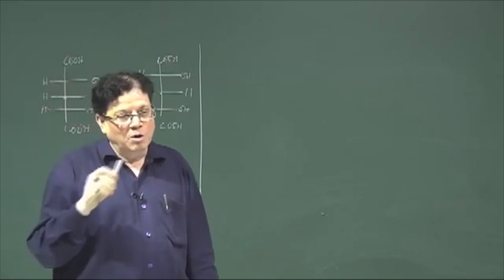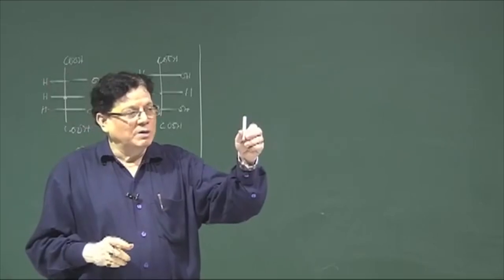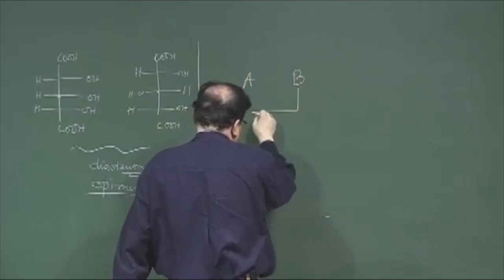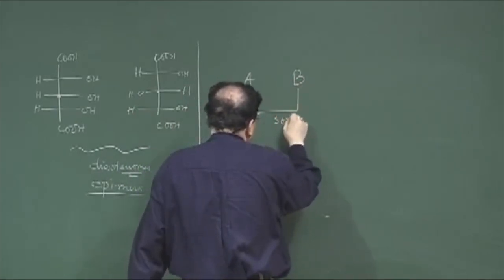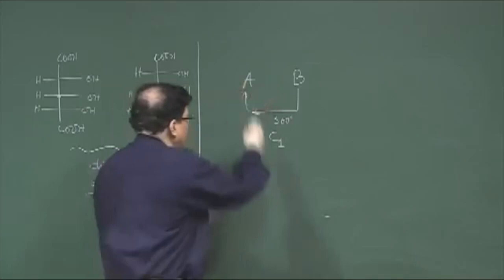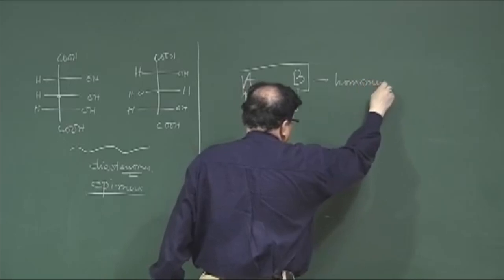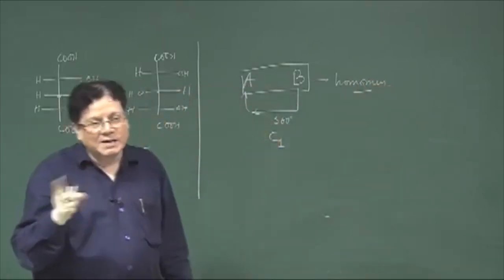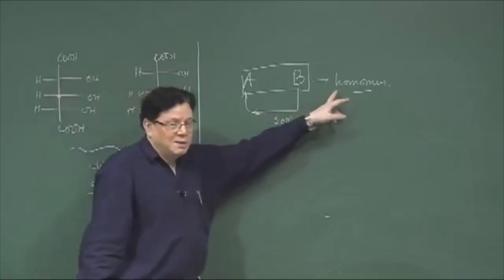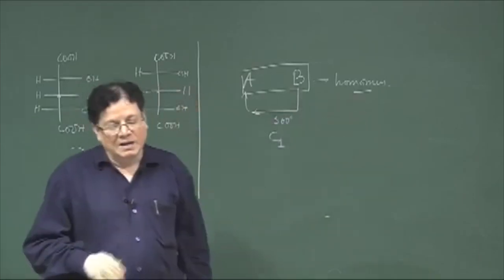Homomers are molecules which are related by a C1 axis. That means if there are two molecules A and B, and if I rotate molecule A by 360 degrees around an axis to get B, it has a C1 axis, and these two will be called homomers. So homomers are basically the same molecules related by C1 symmetry. Just to bring in the concept of symmetry, we have this special nomenclature for same molecules as homomers.